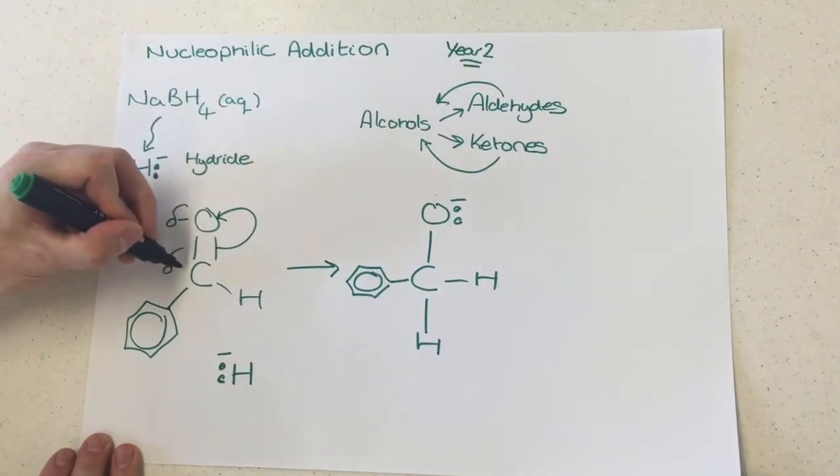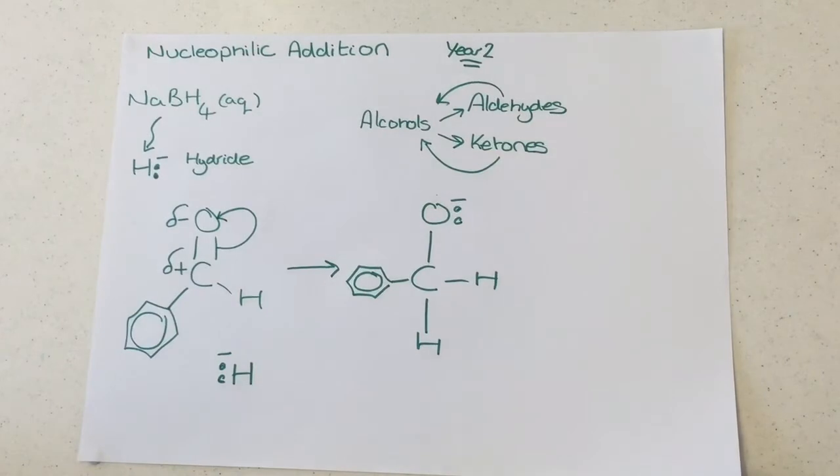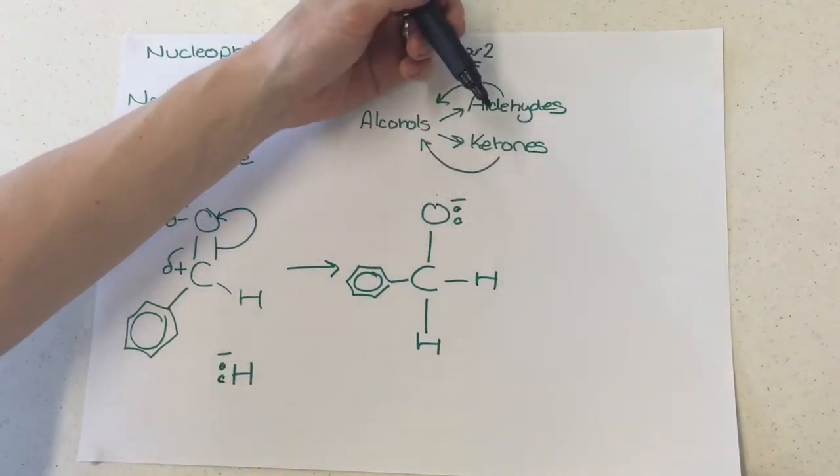Now, the reason that that happens is partly to do with this bond polarity, like so just here on the carbonyl bond. And some people might suggest, well, why didn't it get the electrons here from this hydrogen? Well, then, where's the bond to that hydrogen just here?